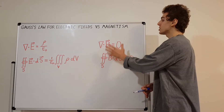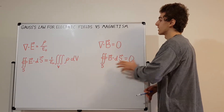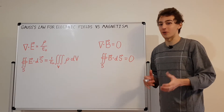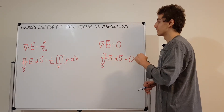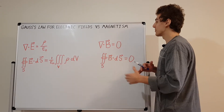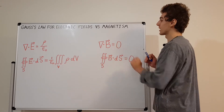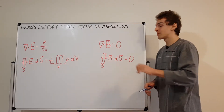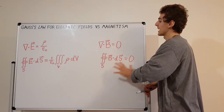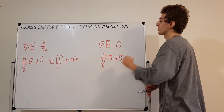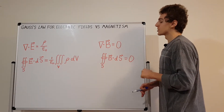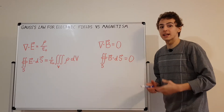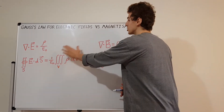This equation is valid experimentally for all of modern physics so far. There may be some requirements for future modifications, but for all of classical electromagnetism this is essentially a very accurate description of the universe. Let's draw some diagrams to get an intuition into these two equations.